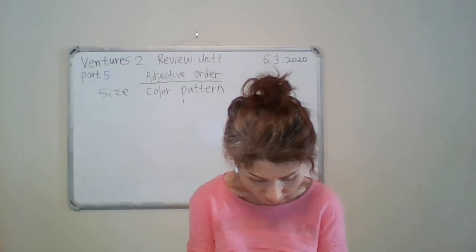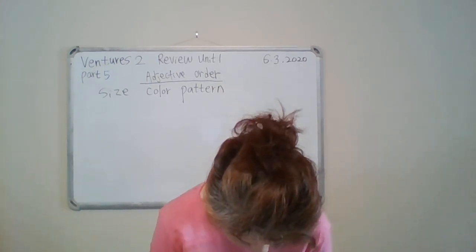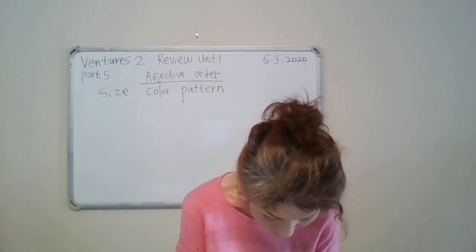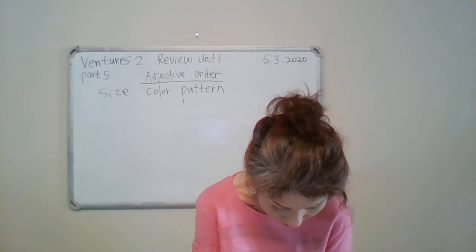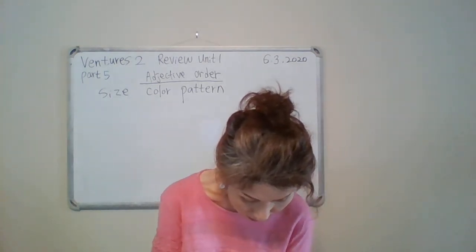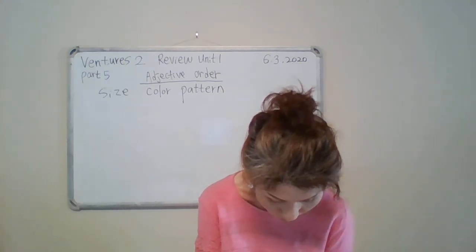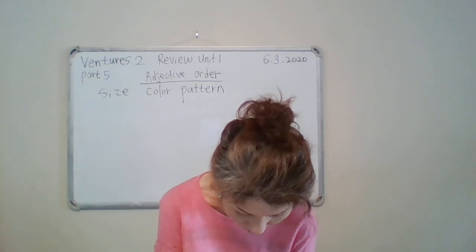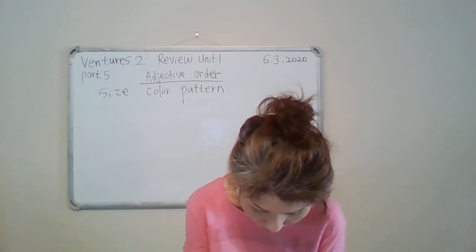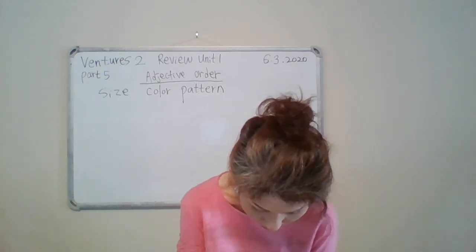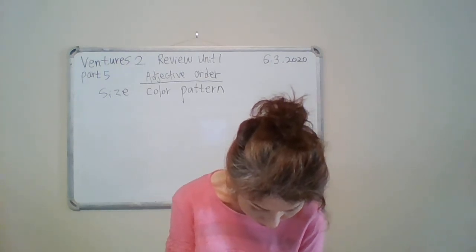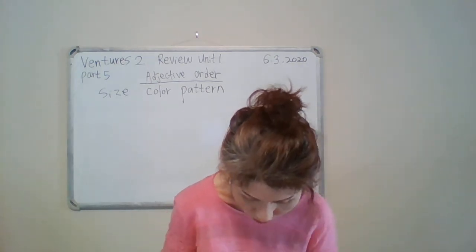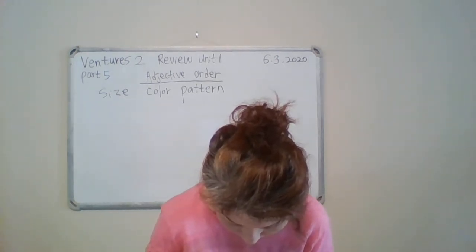Look at page 9. Number 1: Mother A is wearing a flat skirt. Number 2: Mother A has long straight hair. Number 3: Mother B has short curly hair. Number 4: Mother C is wearing a short shirt. Number 5: Mother D is wearing a striped sweater. Number 6: Mother E is wearing a long coat.